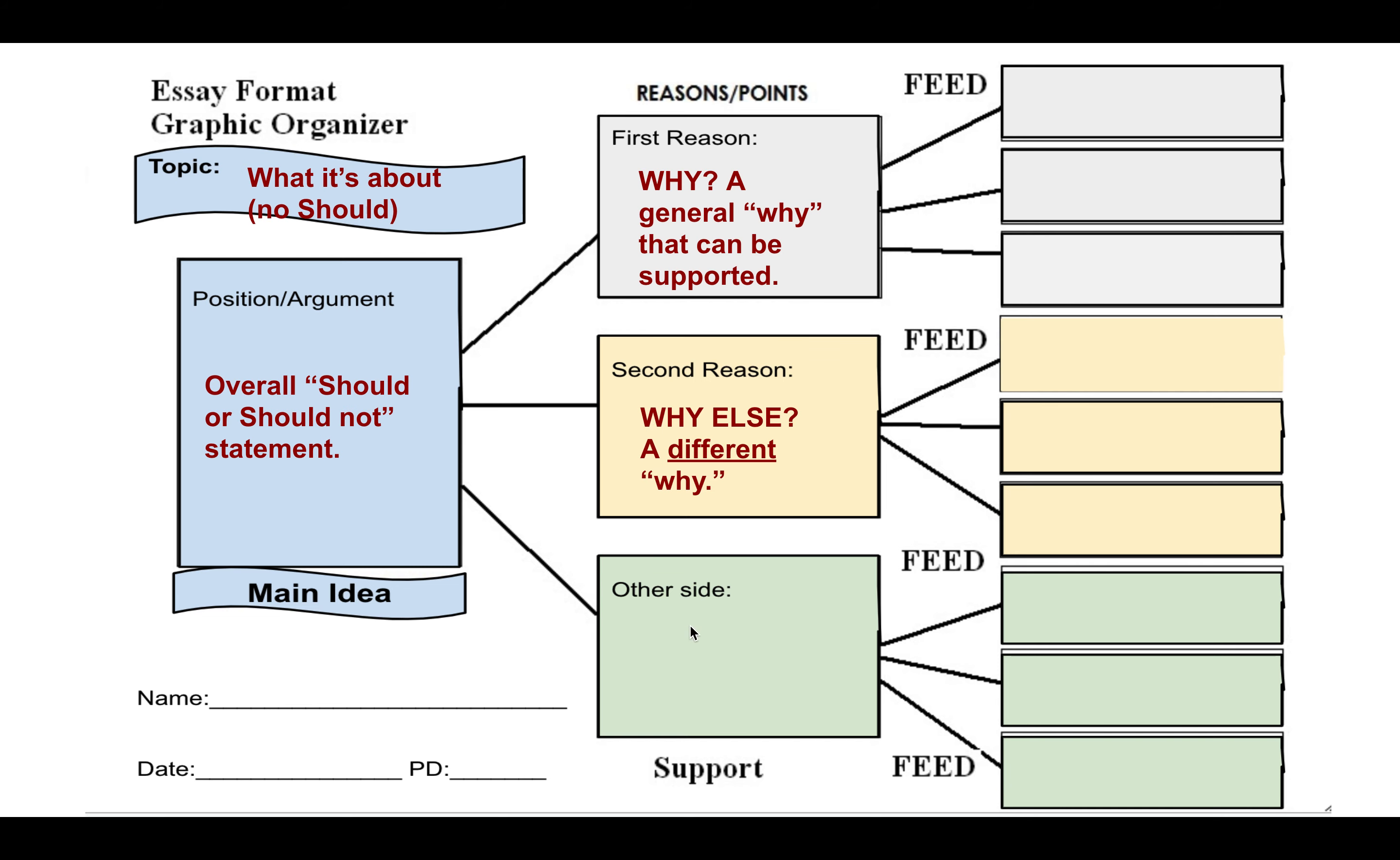Notice on the third box down here, instead of saying third reason, I have other side. Okay? And as you're aware, in arguments, sometimes it's a good idea to mention, well, here's something that somebody might say against me. They give an opposing view. And then once you do that, you shoot it right down. Okay? So the opposition is what you'll give, and then shoot it down with a third why.